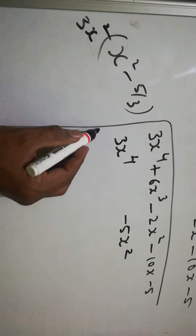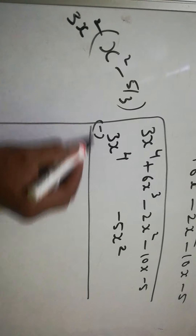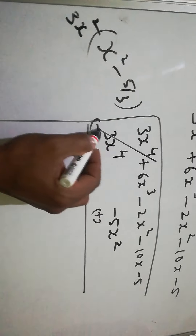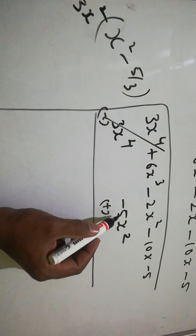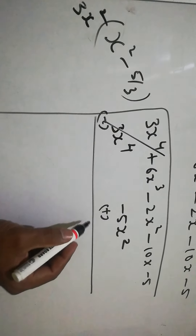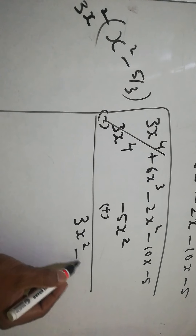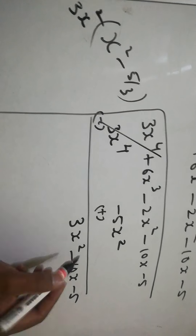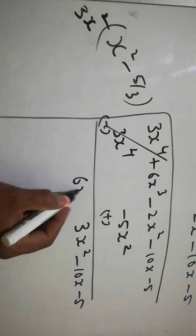Now we change the sign: minus becomes plus. After cancellation, 5 - 2 = 3, so we get 3x². We bring down the 6x³ term.